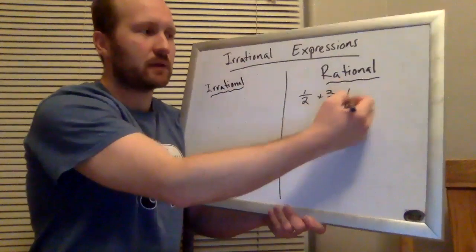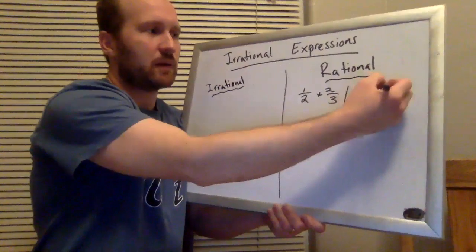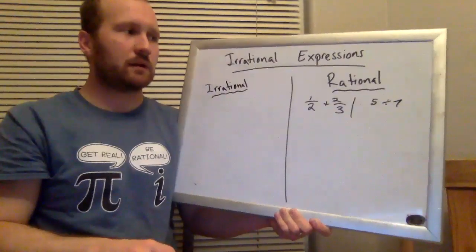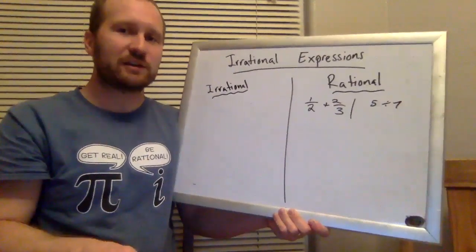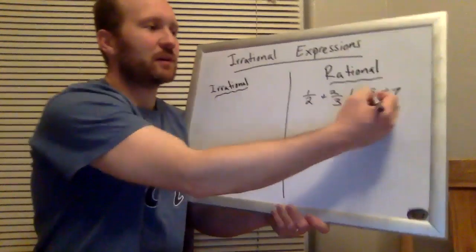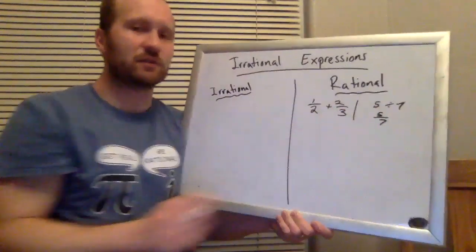If I have something like five divided by seven, by definition that is a ratio. It's five over seven, so it's a rational number.